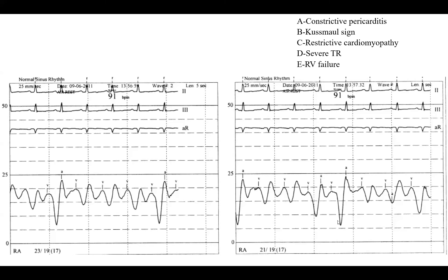The only thing that will change is Y descent — because Y is in the same direction as the inspiratory pressure, the Y will become deeper in inspiration. The mean doesn't change because of those two opposing effects on pressure, but the Y changes because it's in the same direction as inspiration. The answer to that question is Kussmaul sign, which could be any of those conditions, but the most definite answer is Kussmaul sign.